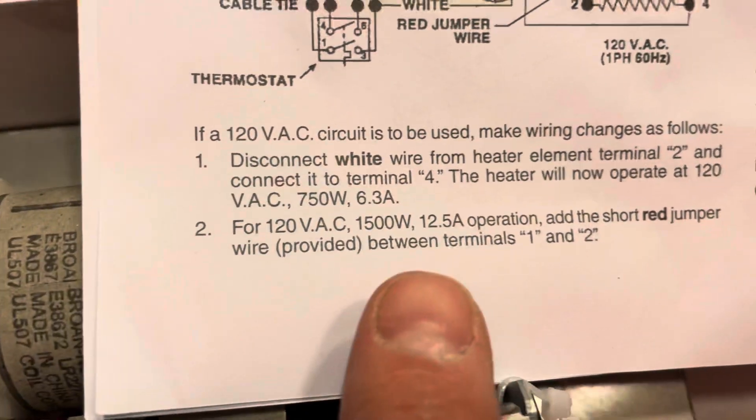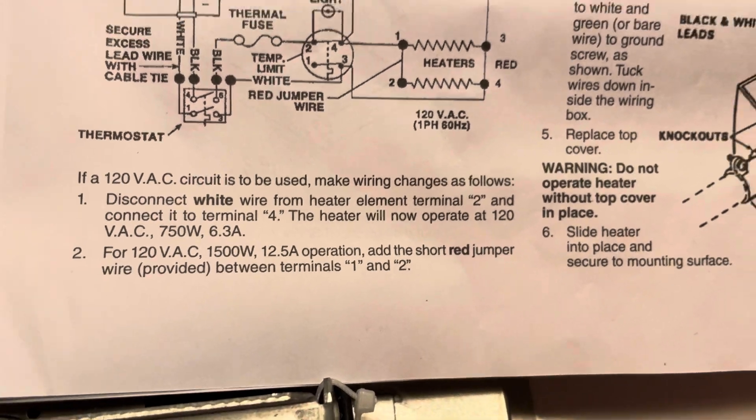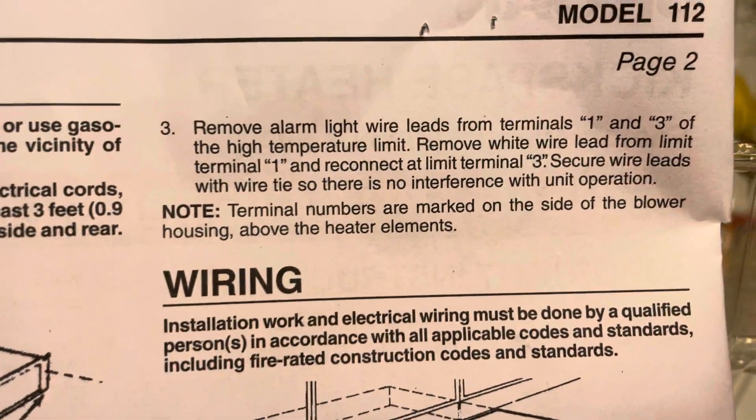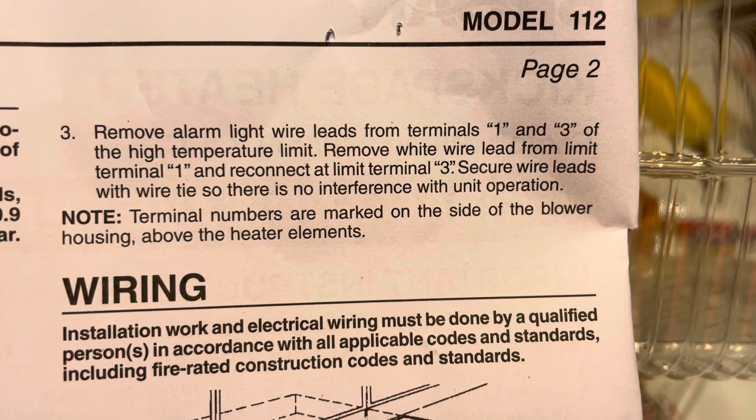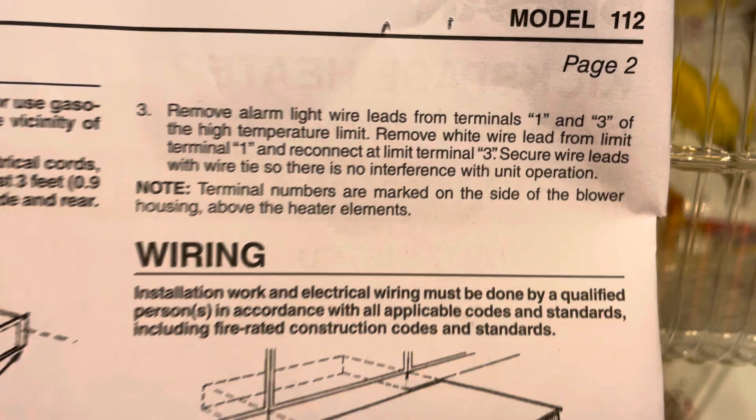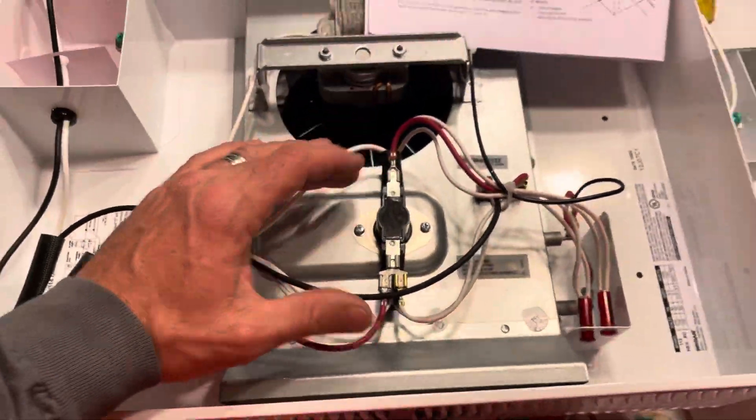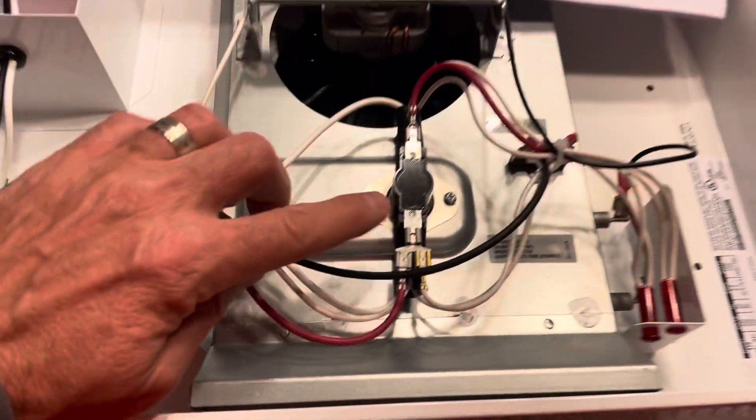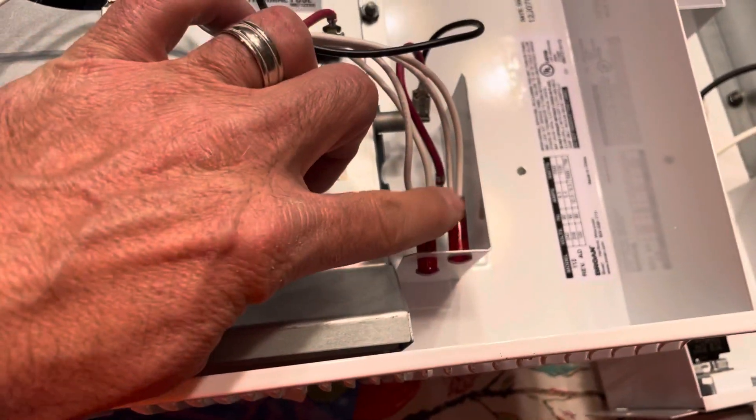And if we did want to operate it at the 1500 watts, then we would connect this jumper wire between terminals one and two as shown there and as described here under number two. Now it gets a little tricky when we go to step number three. Number three is remove the alarm light wire leads from terminals one and three of the high temperature limit.